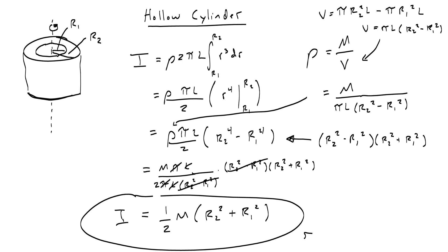This formula is normally used for the toilet paper problem, where you hold on to the end of a toilet paper roll and drop it. You've already done some work with that and we'll do more in the future. Congratulations — you are great at physics.